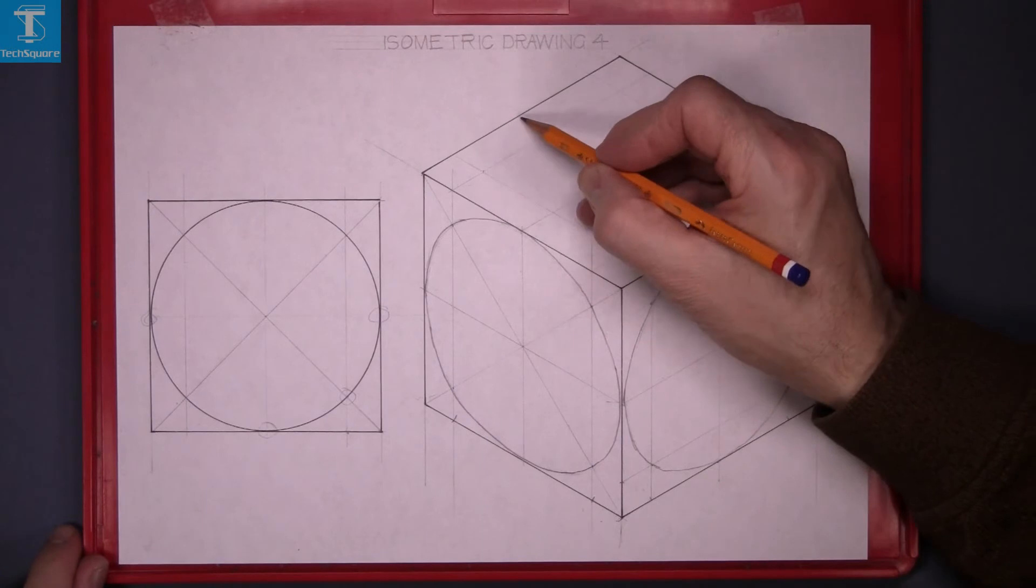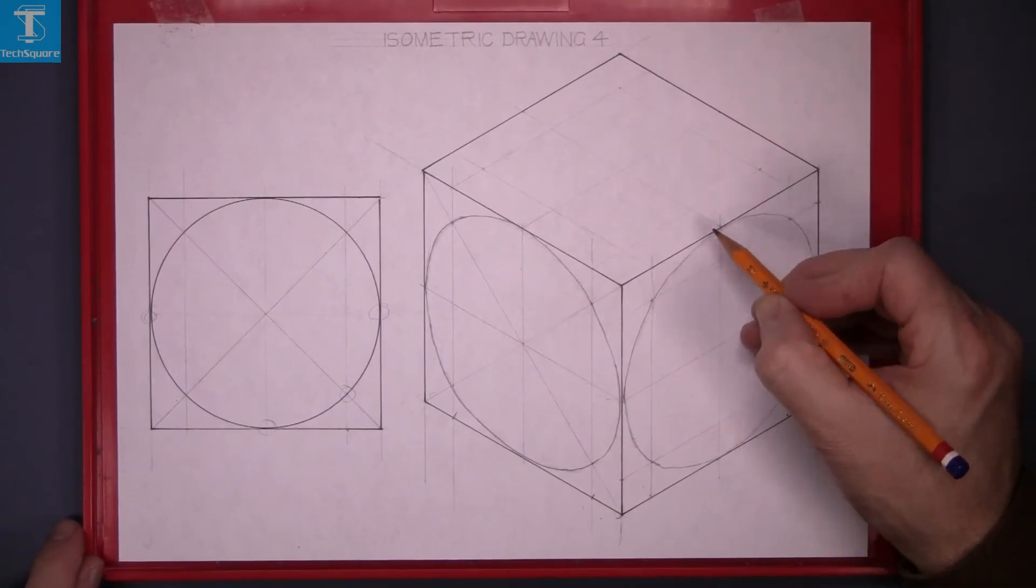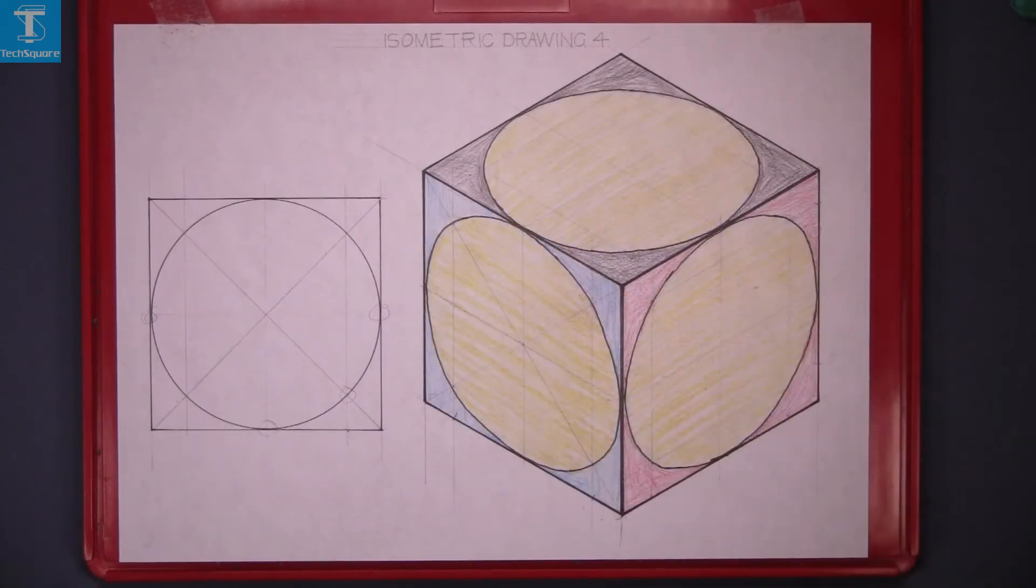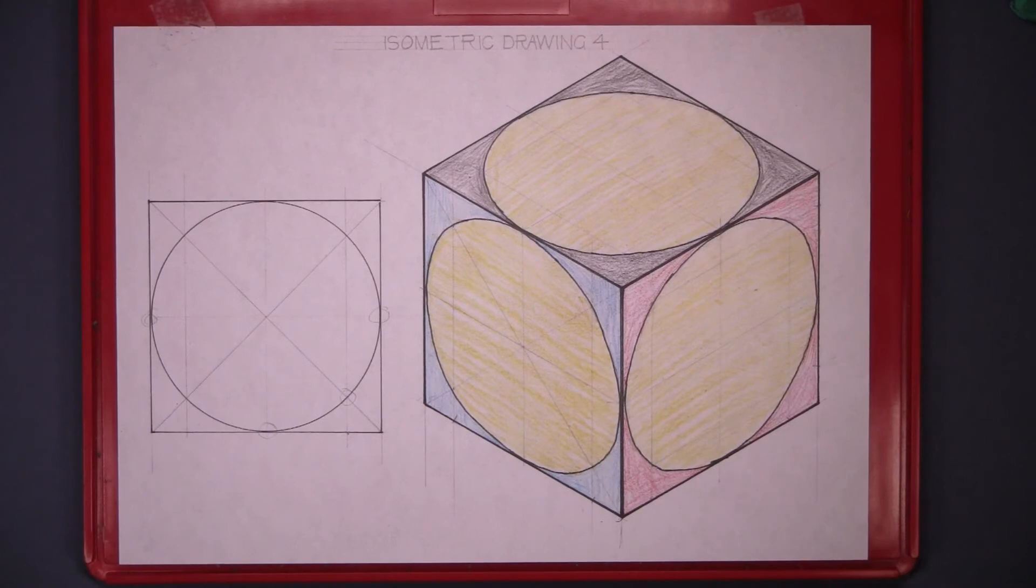And now three, four, five, six, seven and eight. And that's it lined in with a little bit of colour added to it. That's isometric drawing four complete.